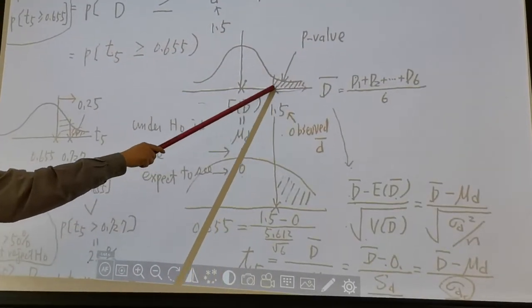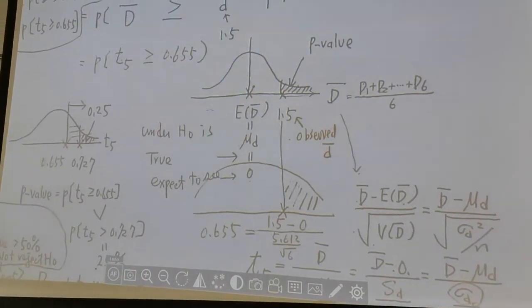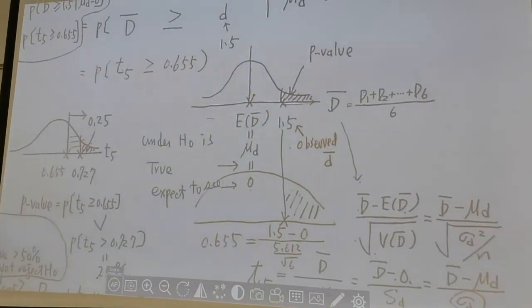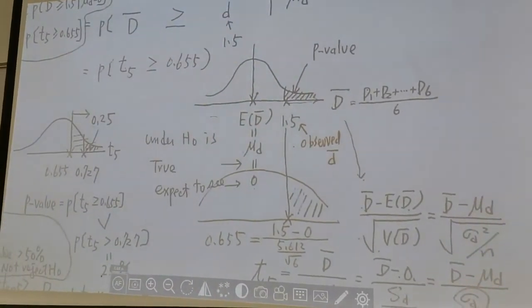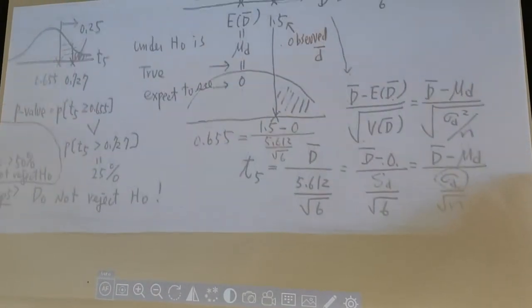So p-value is this upper tail here. And our next job is to find the size of the shaded area. How can we find the size of the shaded area? This will give you a very detailed discussion. Look at the picture here.